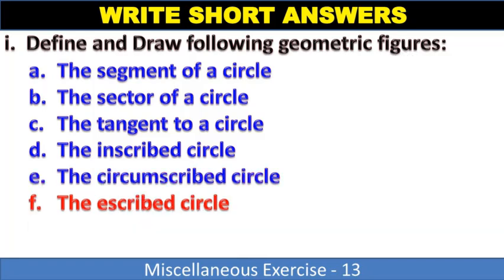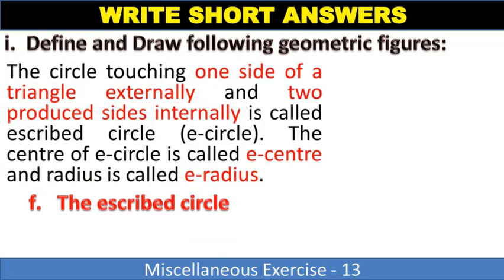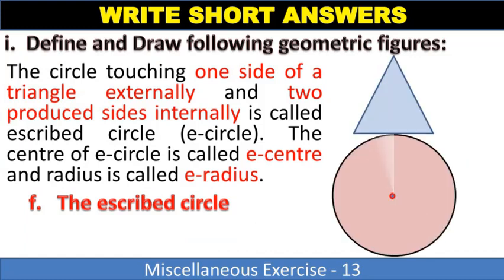The ascribed circle: The circle touching one side of a triangle externally and two produced sides internally is called ascribed circle or e-circle. The center is called e-center and the radius is called e-radius.